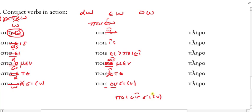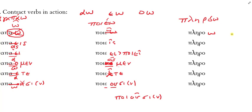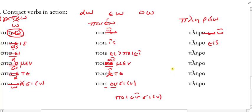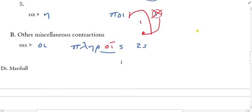Last but not least is the form *plēroō* — 'to fill or fulfill.' Again the lexical form is contrived, but it does indicate the omicron as the stem contract vowel. Adding the connecting vowel omicron + omega: these become omega — *plērō* — 'I fulfill.' For 'you fill' — *plēroō* + *-eis*: this was one of our miscellaneous rules — omicron + epsilon-iota becomes omicron-iota — giving *plērois* — 'you fill.'